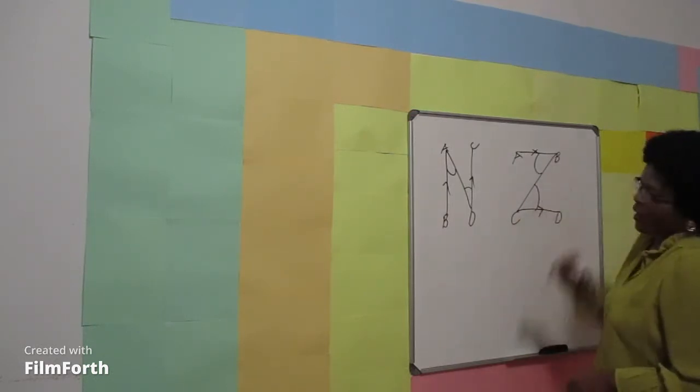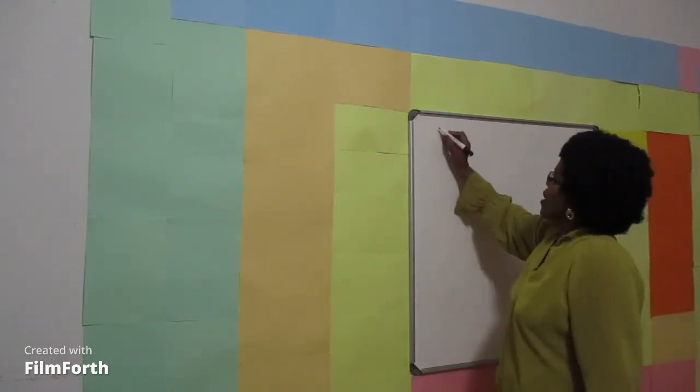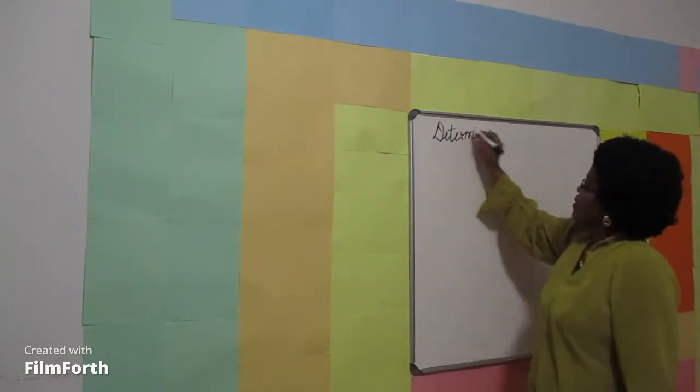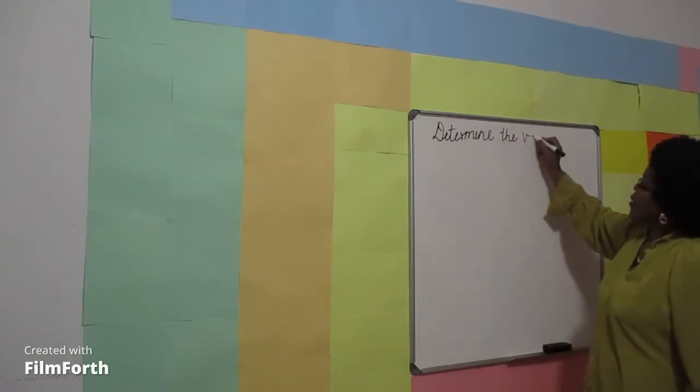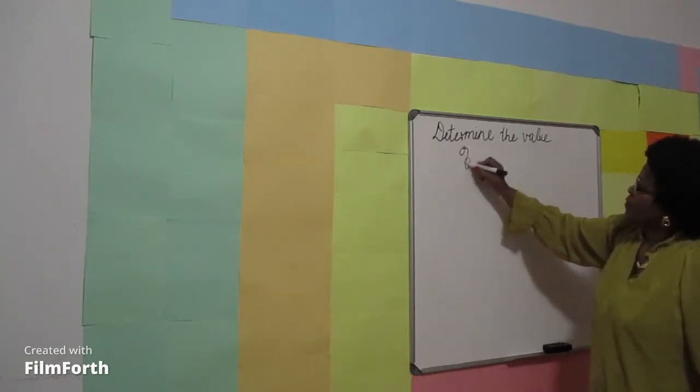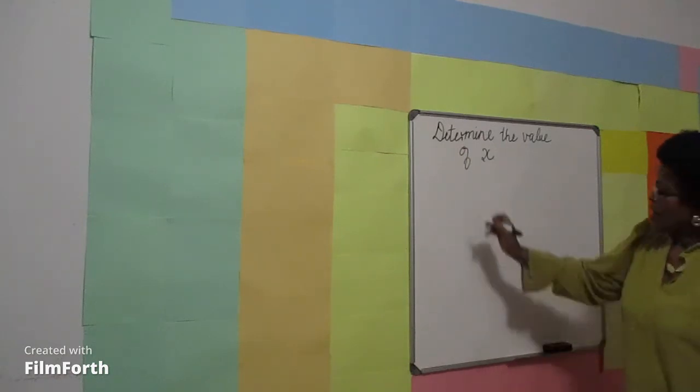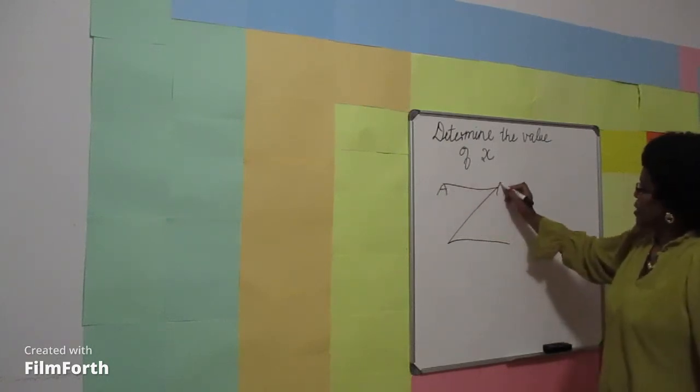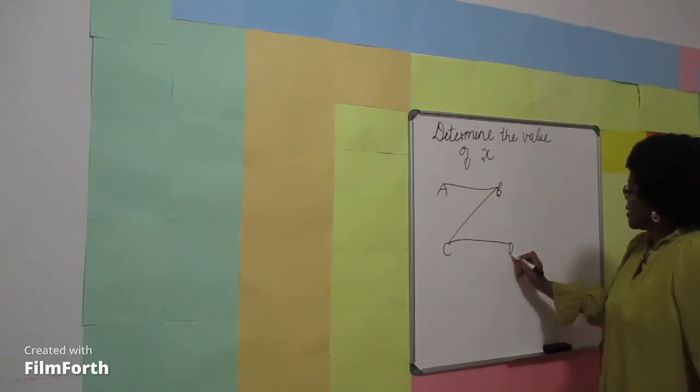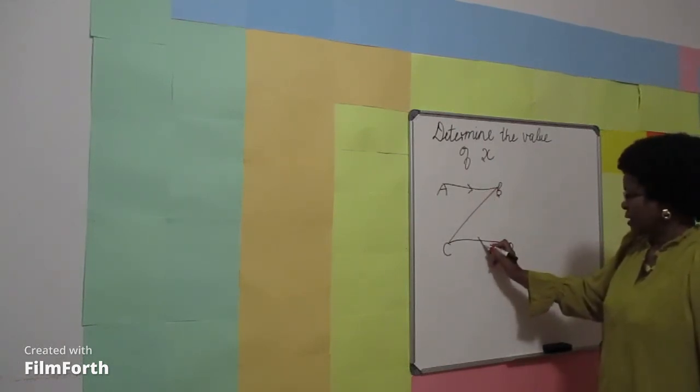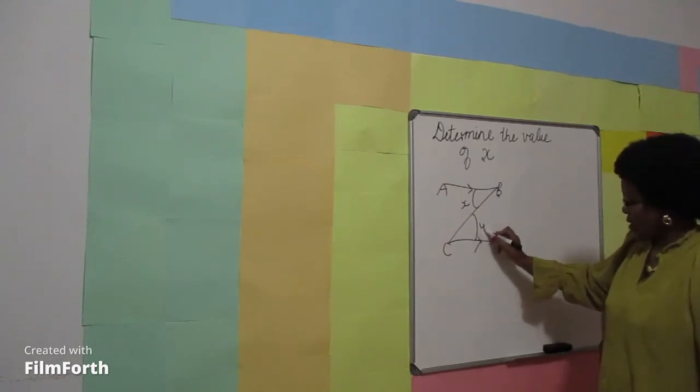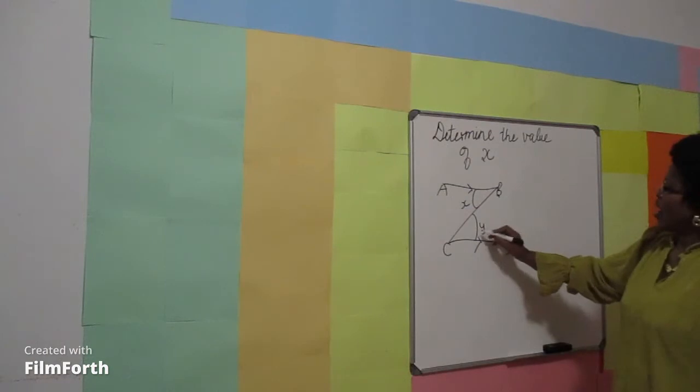Now let's do activity 1. Determine the value of X. Line AB is parallel to line CD. This is angle X and this is angle Y. Determine the value of X where angle Y is 40 degrees.